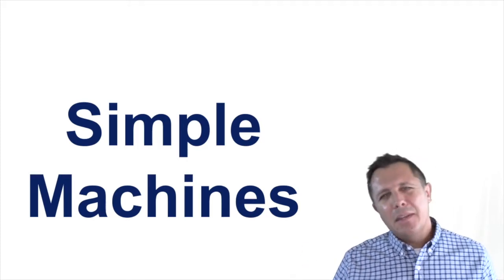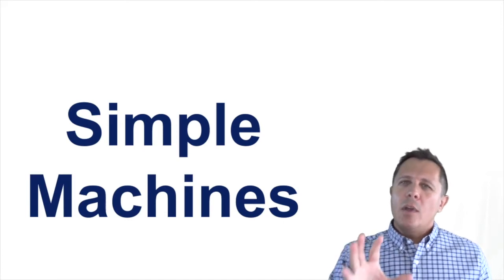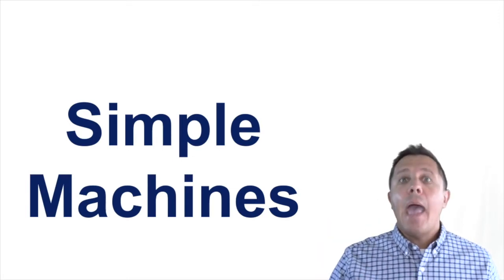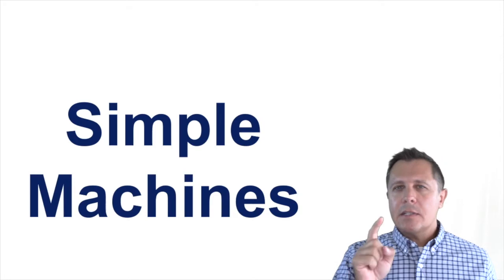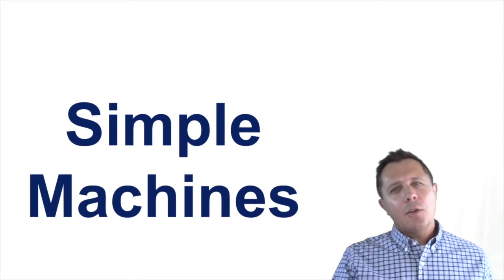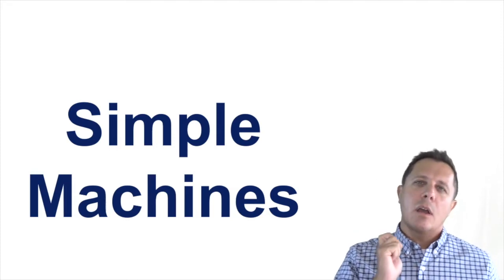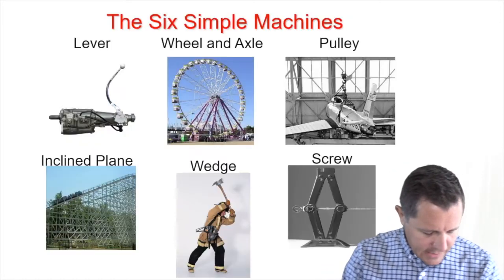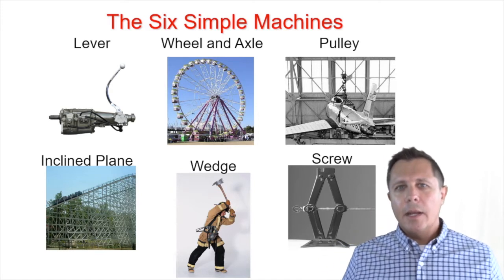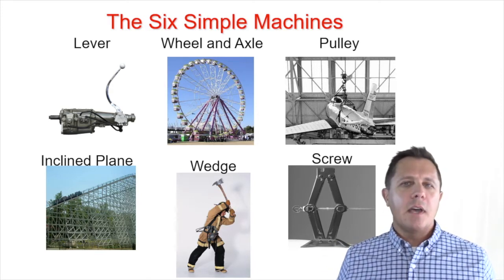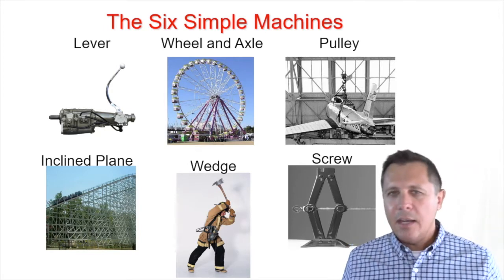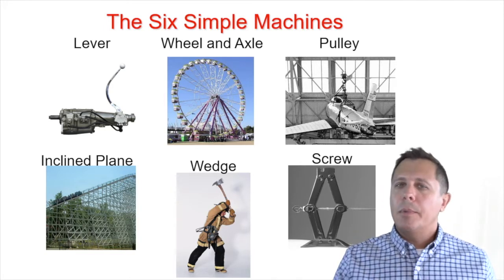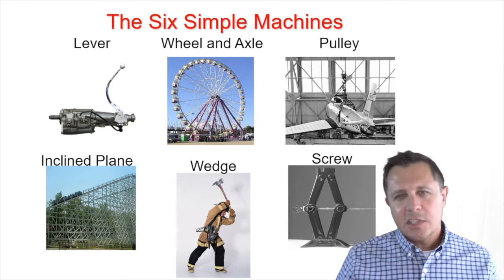We will talk about the different simple machines, but really what we're going to do today is go in depth understanding why simple machines are important and understand a little bit of the math behind it. We won't spend as much time in this lecture on each simple machine, but then in other lectures we will have shorter pieces to talk about a lever, wheel and axle, and all those other things. You should know these simple machines already: lever, wheel and axle, pulley, inclined plane, wedge, and screw. We will go much more in depth than probably what you did before.